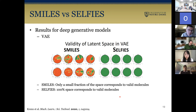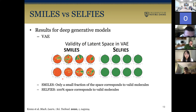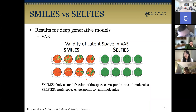The results for SMILES versus SELFIES show that we randomly sample points from the latent space, decode to a molecule, and test validity. Red parts represent invalid molecules and green parts represent valid molecules. The SMILES result shows that only a small fraction of the latent space corresponds to valid molecules, but for SELFIES, 100% of the space corresponds to valid molecules.